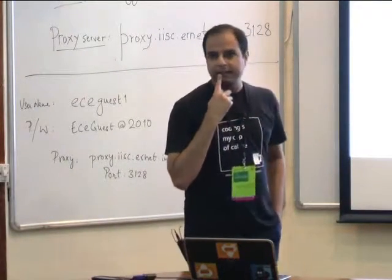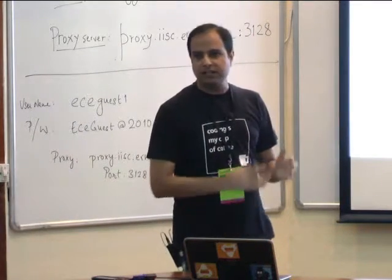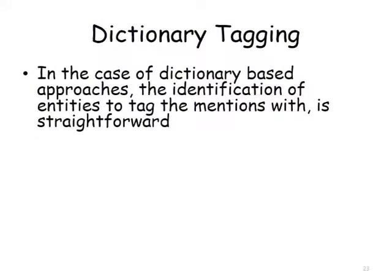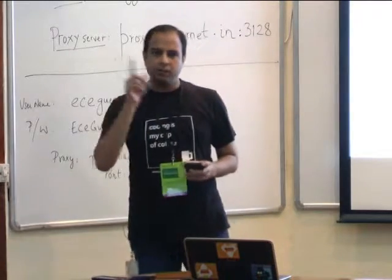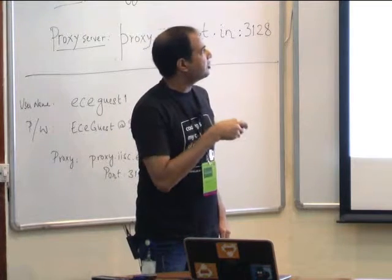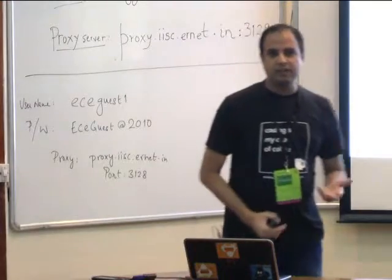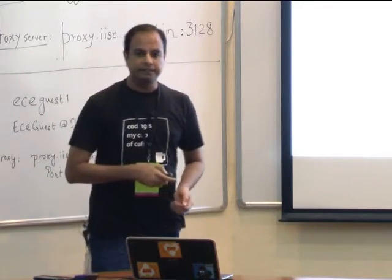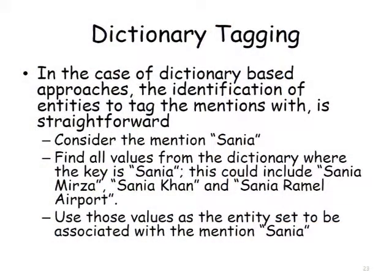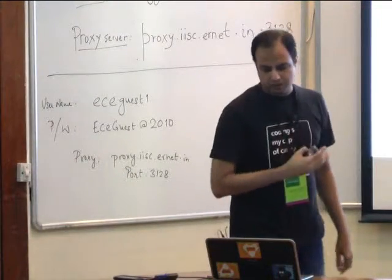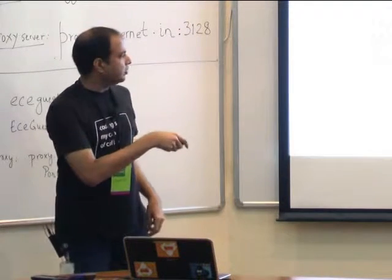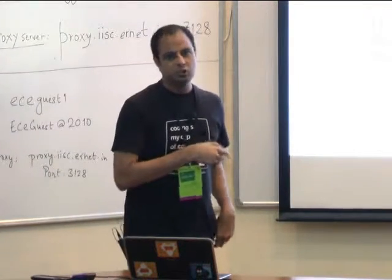The second phase of entity linking is candidate entity generation. You've found phrases that could link to entities in the knowledge base, and now you generate candidates. For the mention 'apple,' it could link to Apple the fruit or Apple the company. In dictionary-based approaches, candidate generation is straightforward: apple was in your dictionary, so its values are the candidate entities. For the mention 'Sanya,' all dictionary values where the key is 'Sanya' — such as Sanya Mirza, Sanya Khan, or Sanya Rimmel Airport — are the candidates.